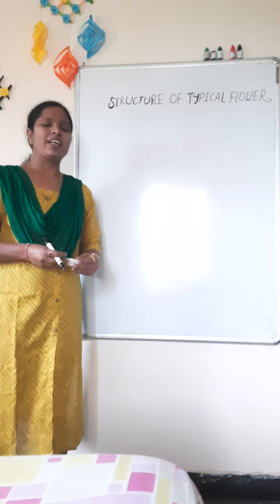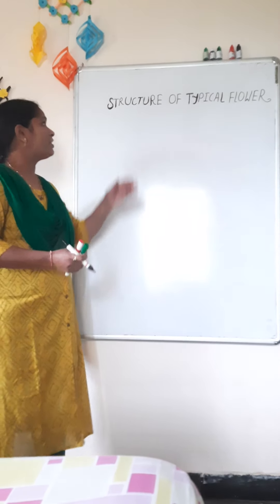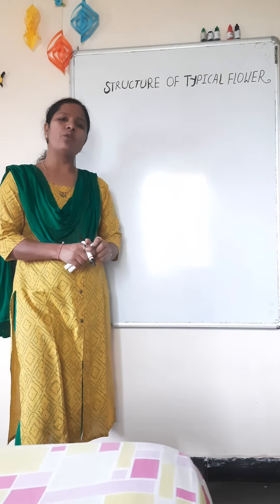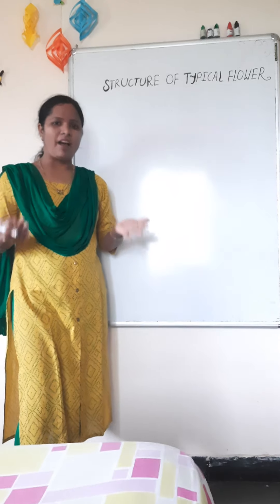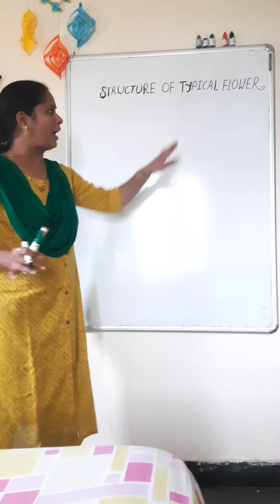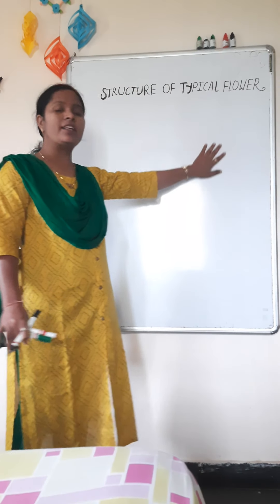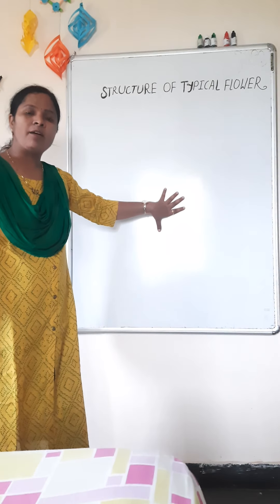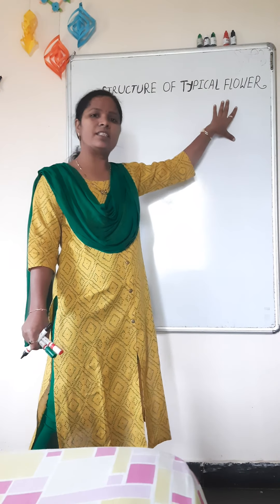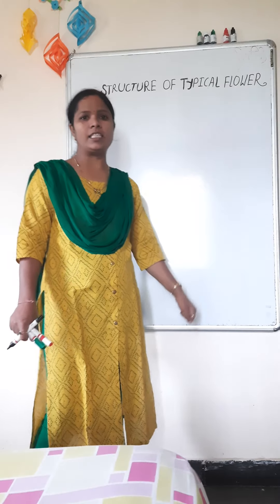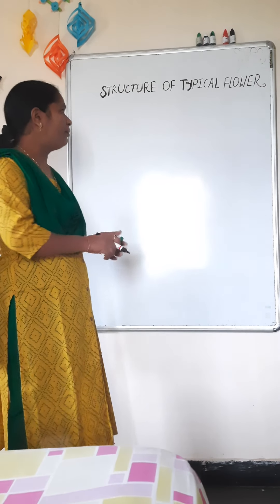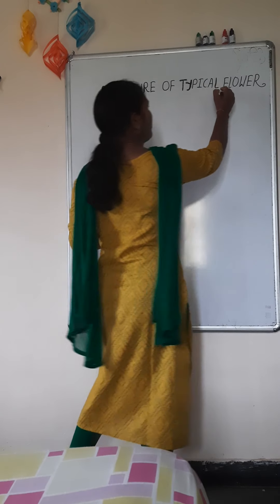Welcome all of you in today's session. Today we discuss about the structure of a typical flower. Do you know what is meant by the flower? Flower is a highly modified reproductive shoot of the plant body. What is the main purpose of this flower? To continue the species is the main purpose — the flower converts into fruit, and inside the fruit is the seed, which is the next generation, converting into a new plant.